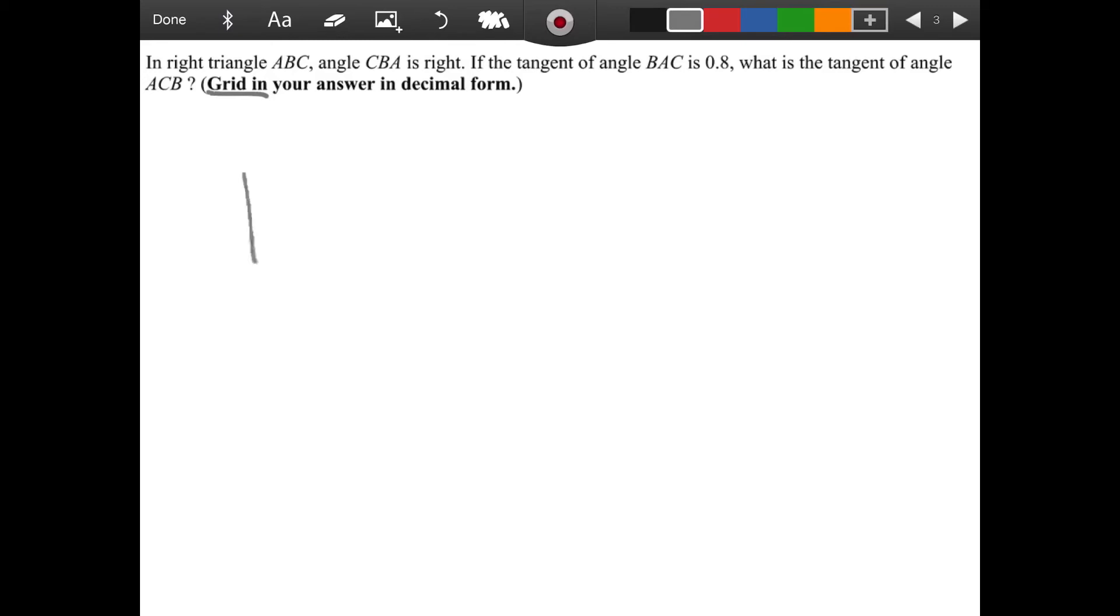First, we have a right triangle A, B, C. B is in the middle. So angle CBA is right, so CBA is the right angle. So we are okay.